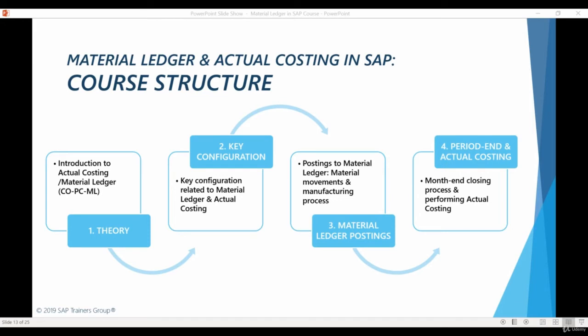As you remember, our example company is in the business of manufacturing pulp. But before we jump into purchasing raw materials and turning them into pulp, we need to make sure that all necessary costing and manufacturing-related master data has been maintained in the system. That's why it's a good idea to start this chapter with a quick recap of the most important master data elements related to costing.